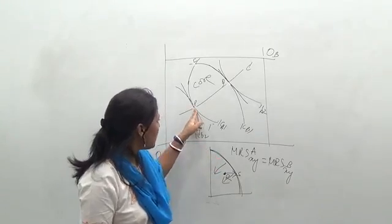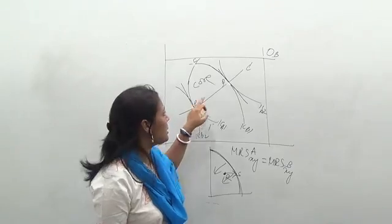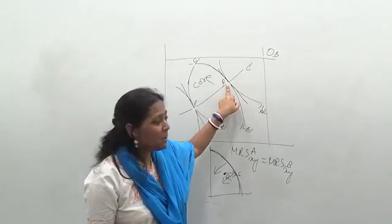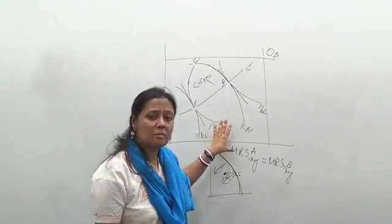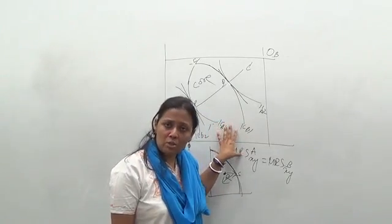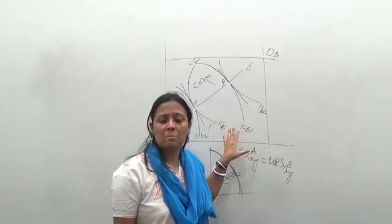Now the point P is one of the equilibrium points, one of the Pareto optimal points. Q is another Pareto optimal point. This way we can show the Pareto optimality. We have concentrated right now only on the consumption side, but it is not necessary that it will be only on the consumption side.